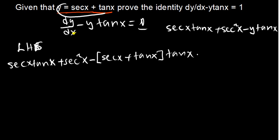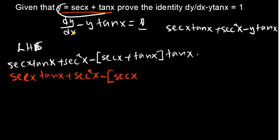I can distribute the tan x which is outside: it becomes sec x·tan x plus sec squared x, and then in brackets we have sec x·tan x plus tan squared x. Now I distribute the negative.